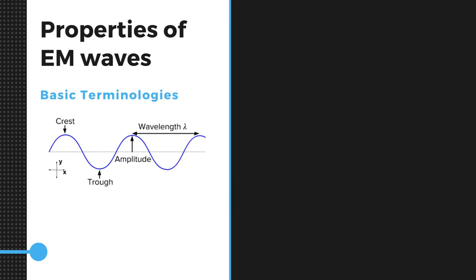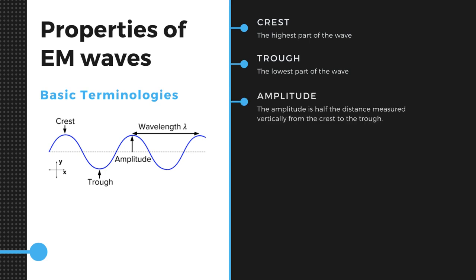Before we move forward, now we should learn some basic terminologies related to the characteristics which describe the wave. Crest: it is the highest part of the wave. Trough: it is the lowest part of the wave.